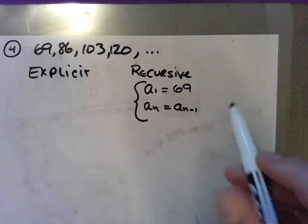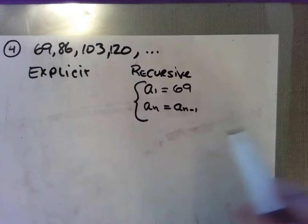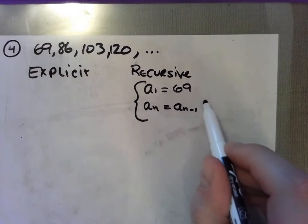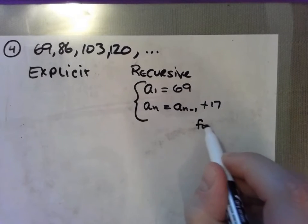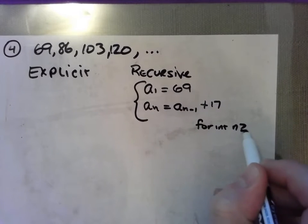So the first term is 69. It looks like we're increasing by 17 each time, so we're going to add 17 to the previous term to define the next term for integers n greater than or equal to 2.